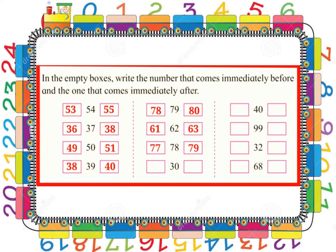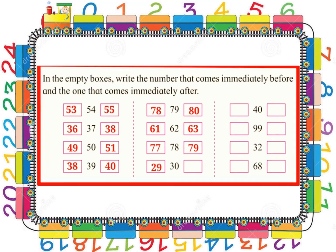Now children, can you all tell me which are the neighbouring numbers before and after number 30? Yes children, you all are right — the neighbouring number before 30 is 29 and the neighbouring number after 30 is 31.